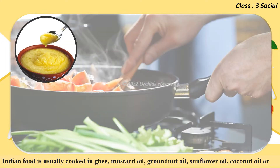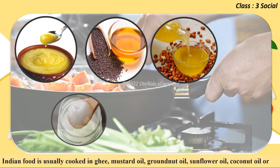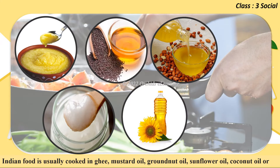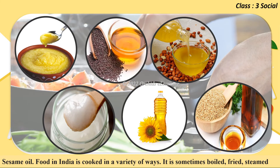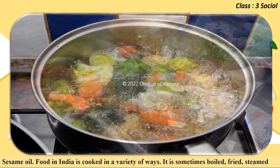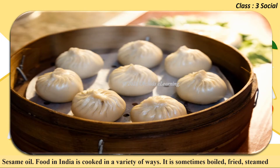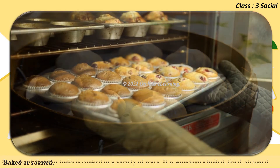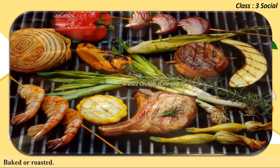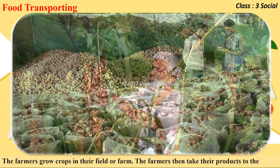Indian food is usually cooked in ghee, mustard oil, groundnut oil, sunflower oil, coconut oil, or sesame oil. Food in India is cooked in a variety of ways — it is sometimes boiled, fried, steamed, baked, or roasted.